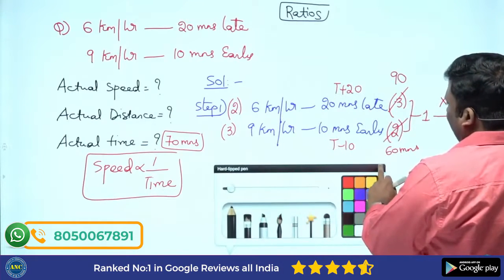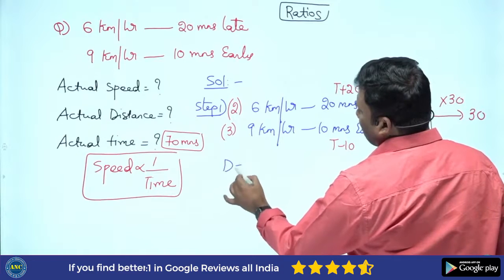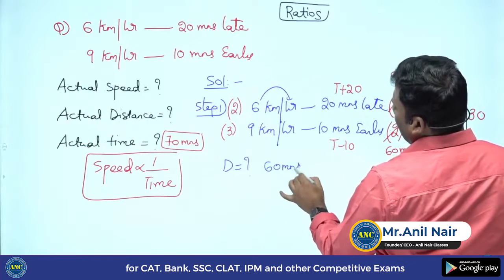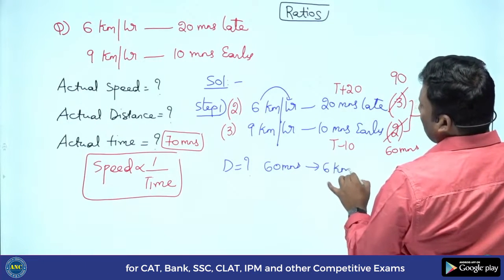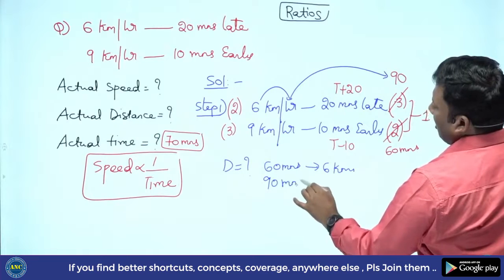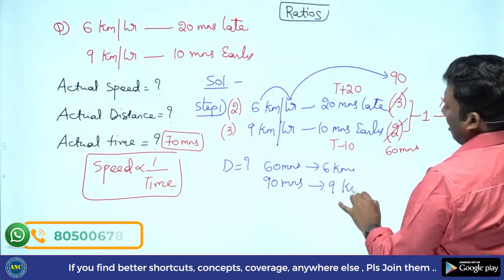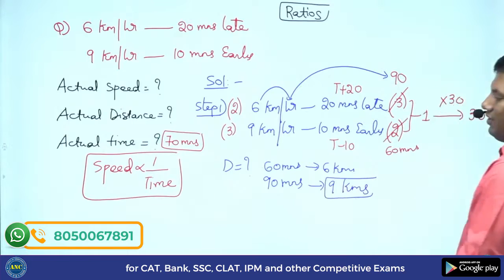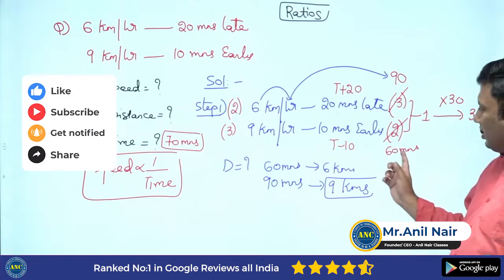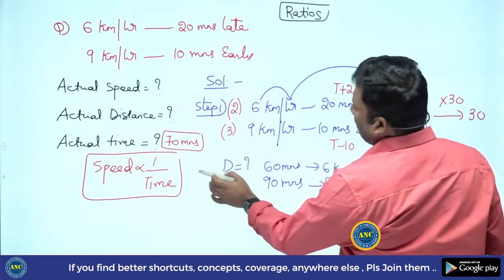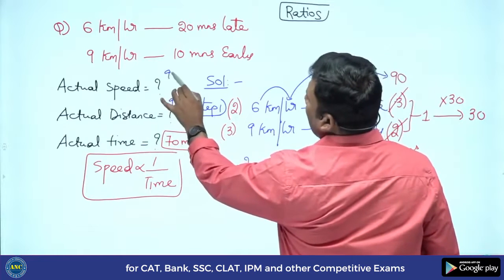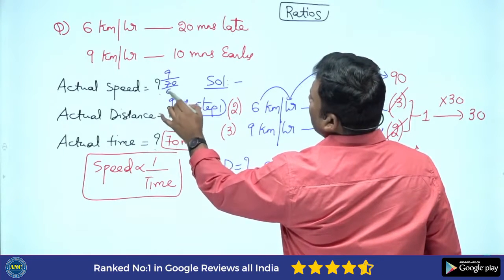Now for actual distance: at 6 km/h, in 1 hour (60 minutes) he travels 6 km. But with this speed he travels for 90 minutes — so distance is 9 km. Actual distance is 9 kilometers.